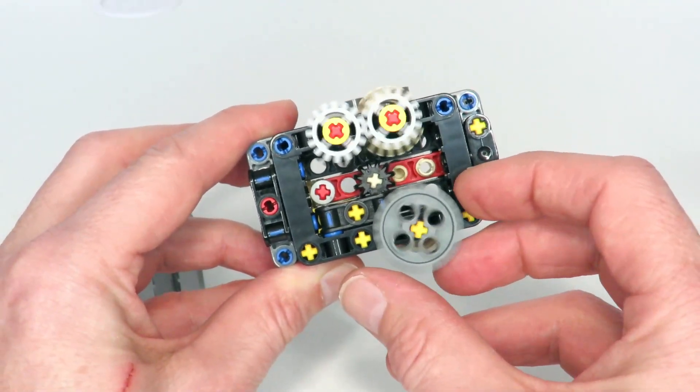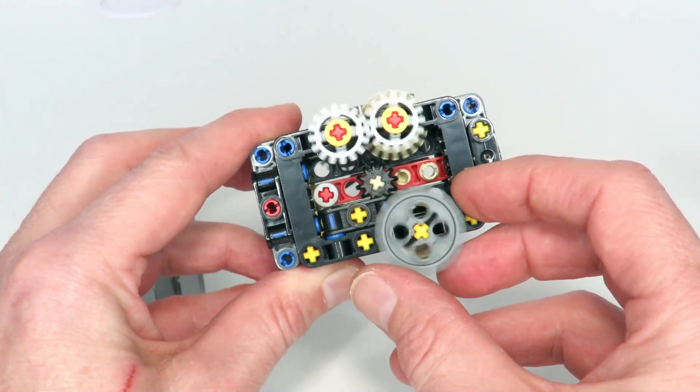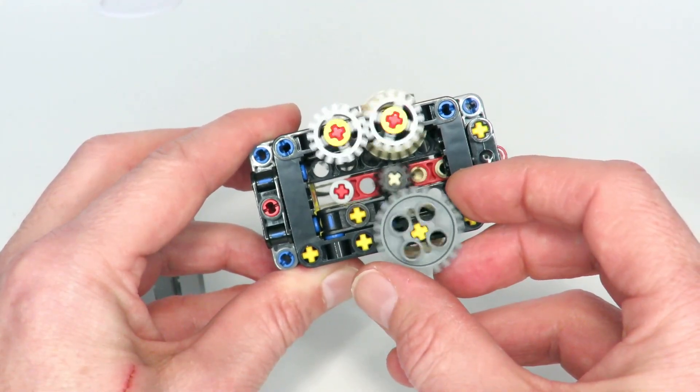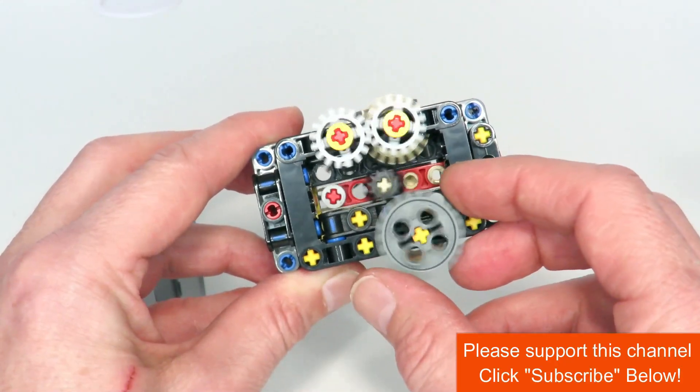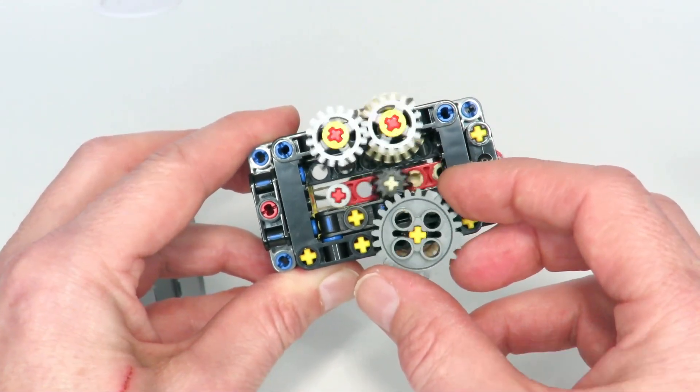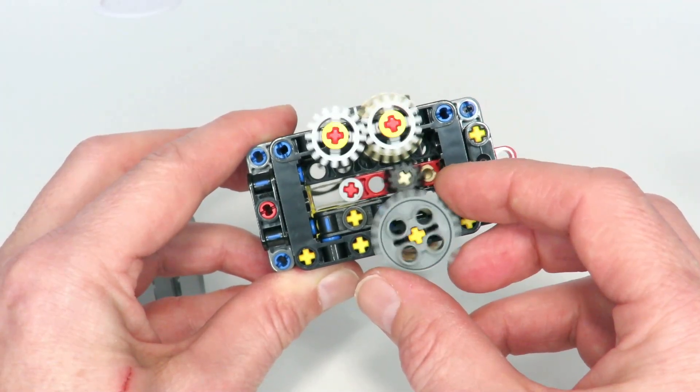Additionally with this particular gearbox, it's crunchy in the sense that if you match the output torque to the pullback of the elastic band you kind of get this crunching sound as it transitions between the gears.